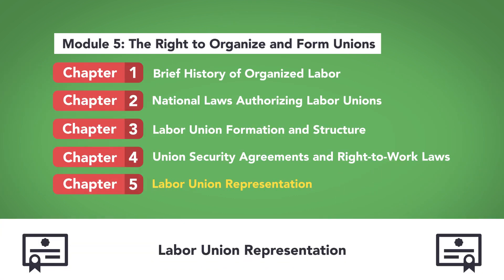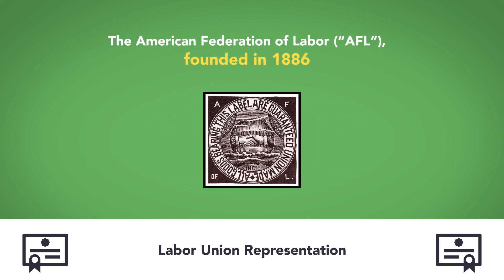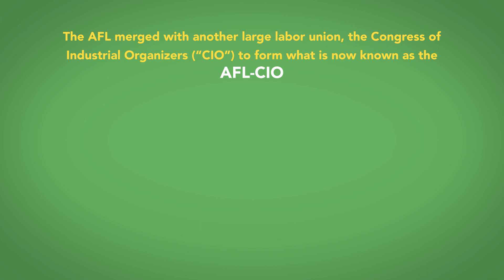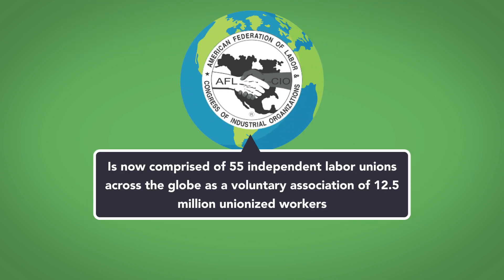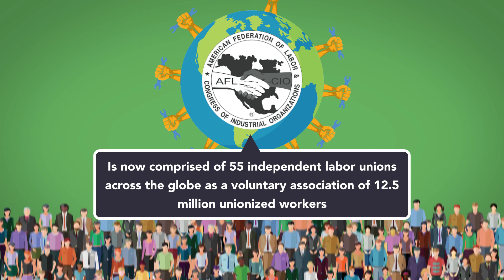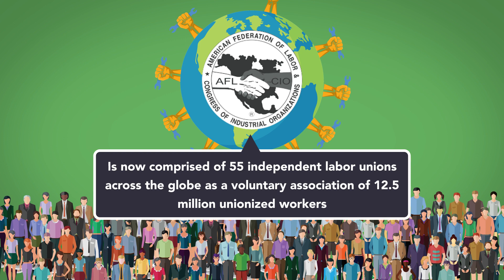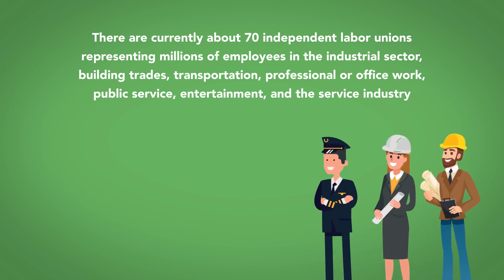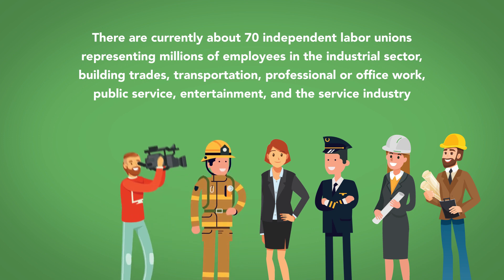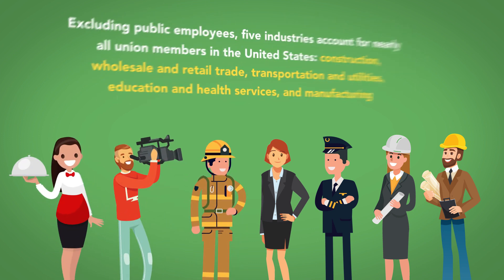Labor Union Representation. The oldest continuously operating labor union in the U.S. is the American Federation of Labor (AFL), founded in 1886. The AFL merged with another large labor union, the Congress of Industrial Organizers (CIO), to form what is now known as the AFL-CIO. The AFL-CIO is now comprised of 55 independent labor unions across the globe as a voluntary association of 12.5 million unionized workers. There are currently about 70 independent labor unions representing millions of employees in the industrial sector, building trades, transportation, professional or office work, public service, entertainment, and the service industry.